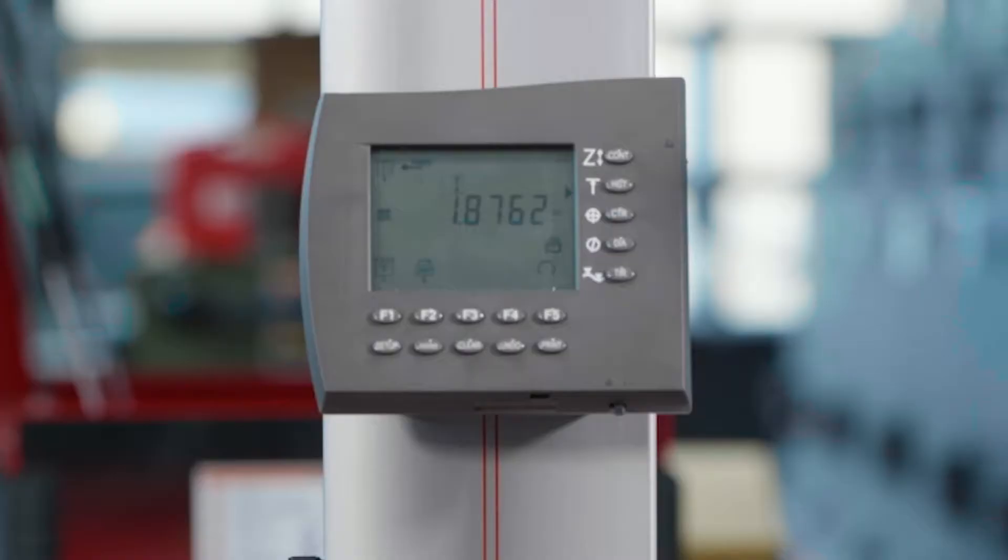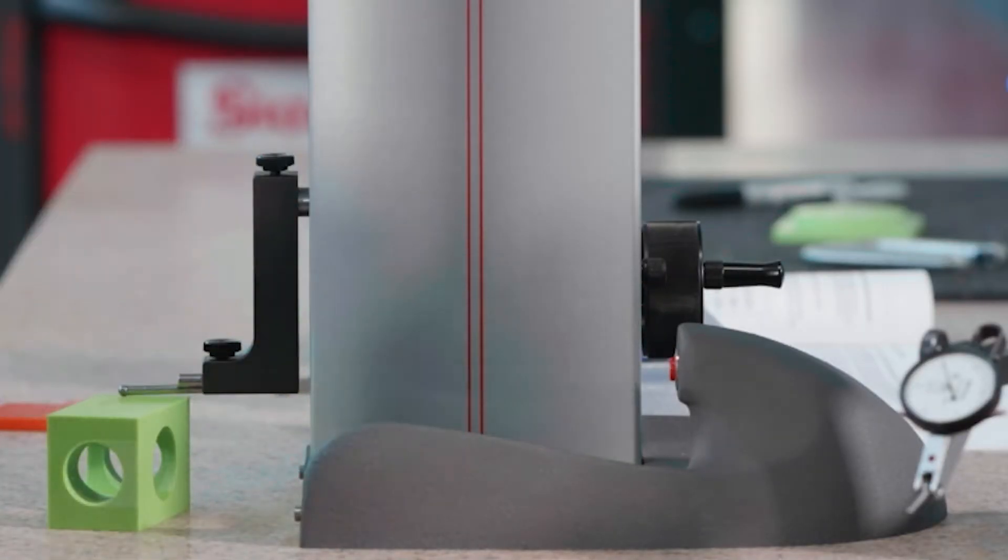If I press this red button on the side of the machine, it'll tell me the difference between those two points. This also has a total indicator reading function, which is really handy. It's good for quick measurements to see if two points are different and by how much.